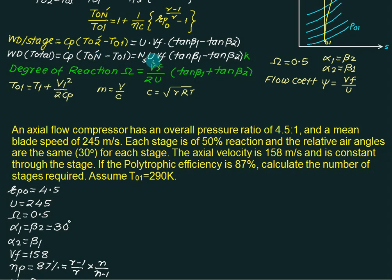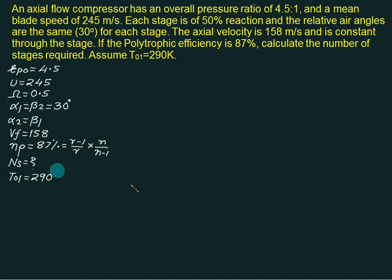Then we know the number of stages, u is known, Vf is known. Beta 1 is unknown. First of all, we use this value, put gamma equal to 1.4 and solve for n. Using this equation, we can get the value of n. So n will be 1.48. This value of n is always greater than gamma because it is a polytropic compression. The index of polytropic compression for high speed machine is always greater than gamma, that is 1.4.